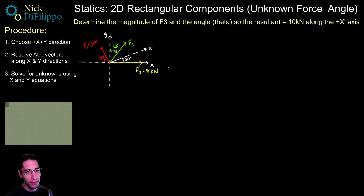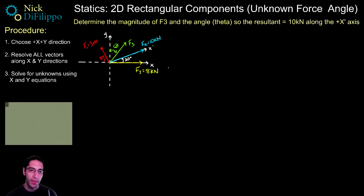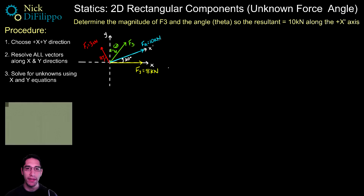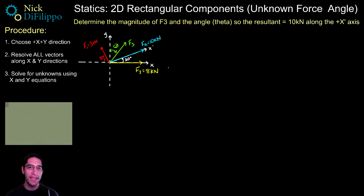So in this problem we have three forces F1, F2, and F3, and what we're asked to do is determine the magnitude of F3 and the angle theta so that our resultant is 10 kilonewtons along the positive x-prime axis. Our resultant FR is equal to 10 kilonewtons. To solve a problem like this we are going to use the same starting steps as before, however the last equation we need to use is going to be slightly different.